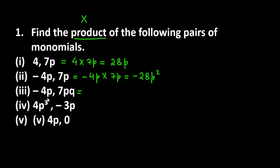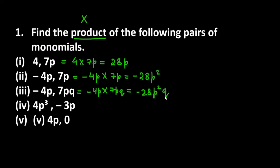Now we have minus 4p and 7pq. First, the multiplication sign comes between minus 4p and 7pq. Multiply 4 and 7 to get minus 28. How many p's are there? Two — so p squared. And how many q's? One. So the answer is minus 28p²q.